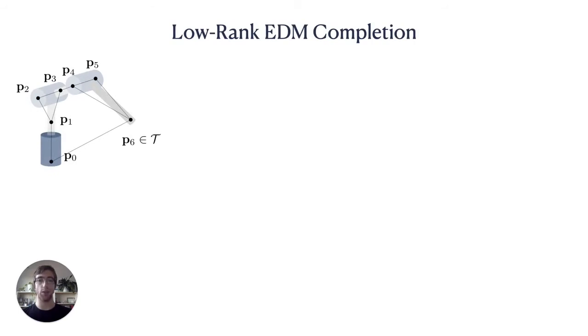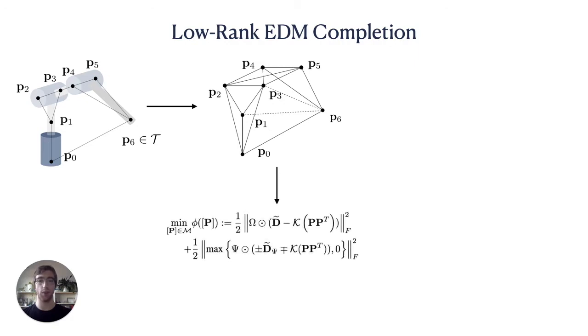Now that we've established a procedure for transforming a robot's kinematics into a set of constraints on distances between points, we will briefly summarize our approach for completing this partial Euclidean distance matrix. We use a recent approach for EDM completion that accounts for the low rank of our solution caused by the 2D or 3D nature of physical inverse kinematics problems.